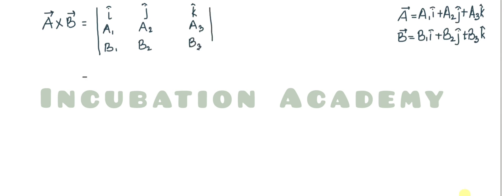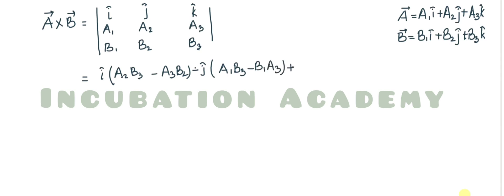Expanding this determinant gives: i(a2·b3 − a3·b2) − j(a1·b3 − b1·a3) + k(a1·b2 − b1·a2). Now let us compute (a cross b) · c.